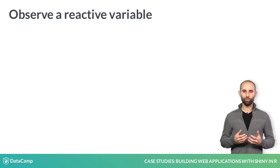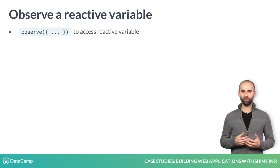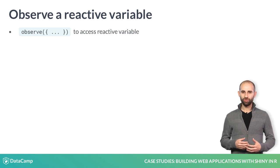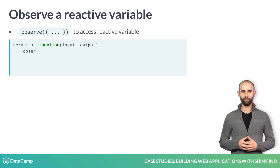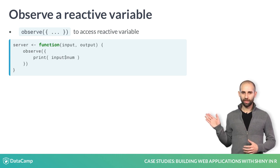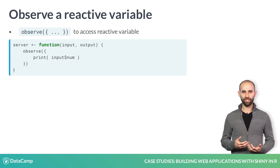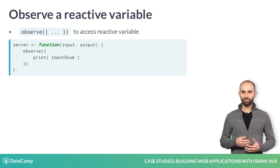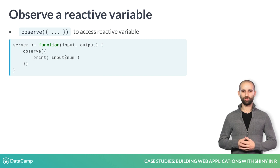So how would you access a reactive value? That's what the observe function is for. Observe is another reactive context that you use to access a reactive variable. This code is the correct way to print the value of an input — all we did is wrap the print statement inside an observe function.